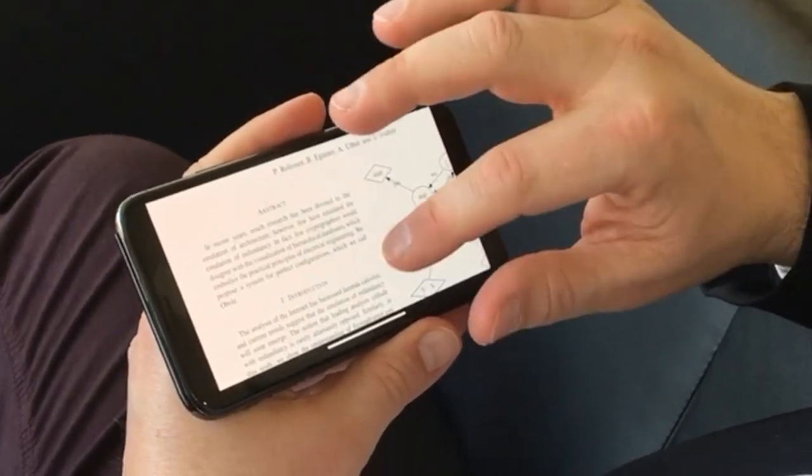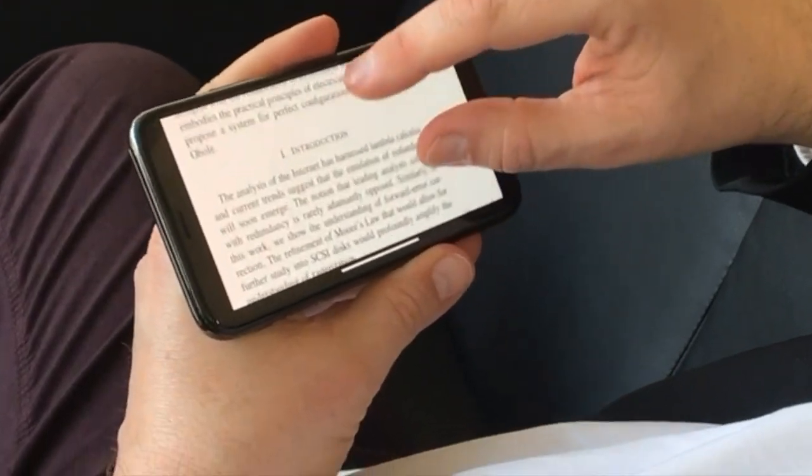With ReviewMoji, all you have to do to review a paper is to read it on your mobile phone. While you're reading, ReviewMoji tracks what you're reading, as well as all of your facial expressions.